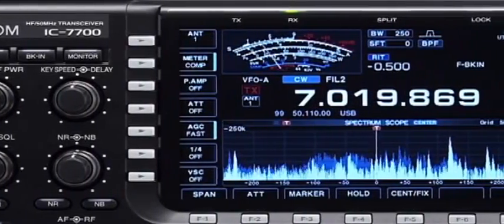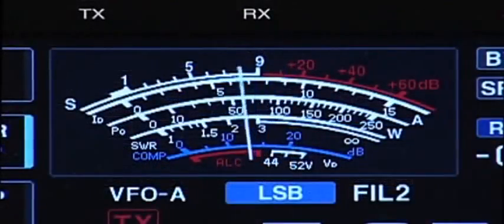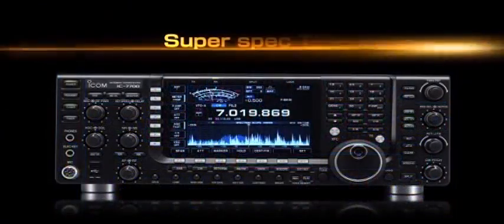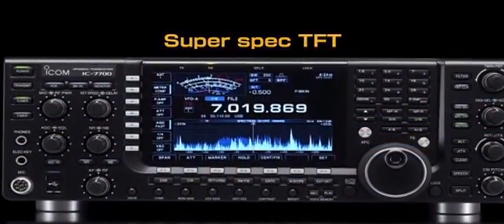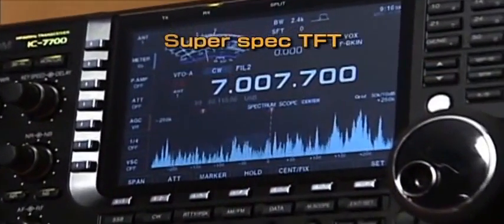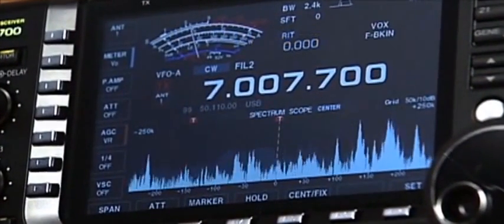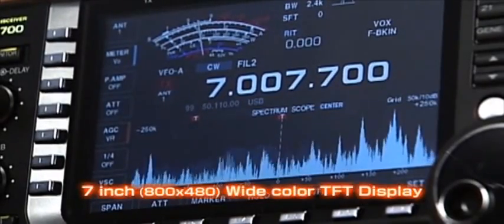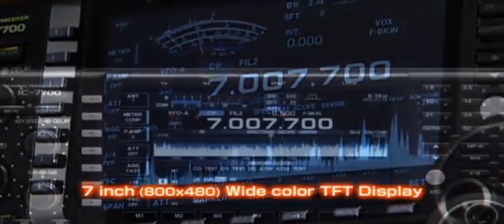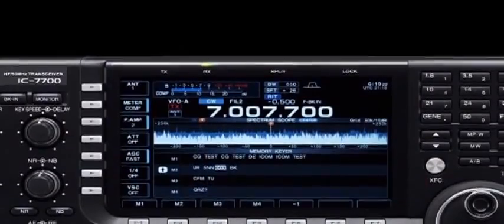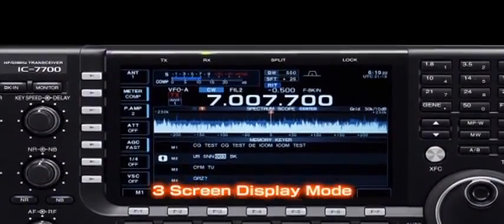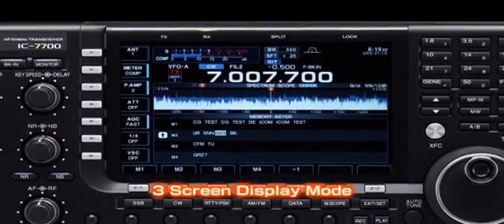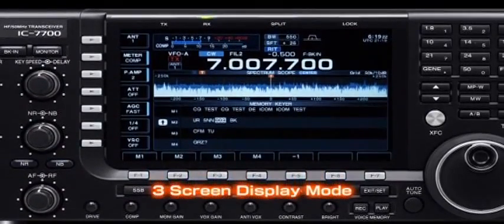The IC7700 leaves the competition in the dust when it comes to features. For example, the LCD display. Response time, color, resolution, visibility. The IC7700's display has been examined for all aspects, and an active matrix 7-inch TFT color display was selected for the IC7700. Various operating information is visually shown on the display. When it comes to transceiver displays, ICOM is the benchmark.